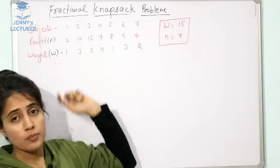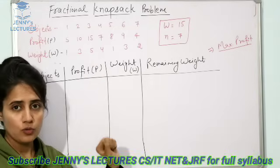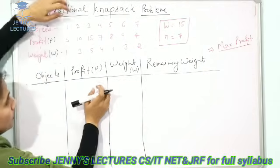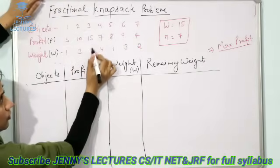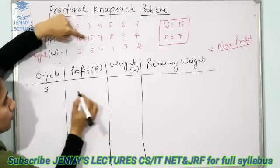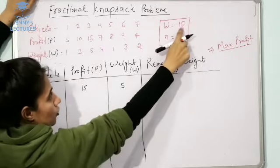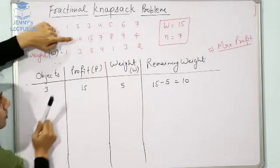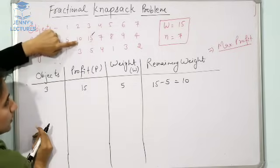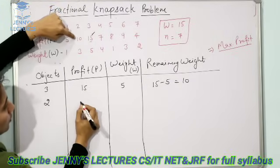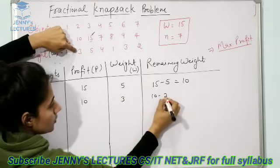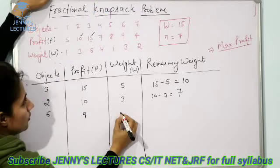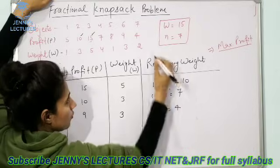First approach: select items according to their maximum profit. Check which item has the maximum profit — that is 15, object 3, profit 15, weight 5. Remaining weight: 15 − 5 = 10. Next maximum profit is 10, object 2, profit 10, weight 3. Remaining: 10 − 3 = 7. Next is 9, object 6, profit 9, weight 3. Remaining: 7 − 3 = 4.